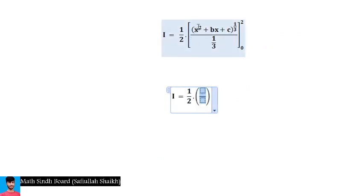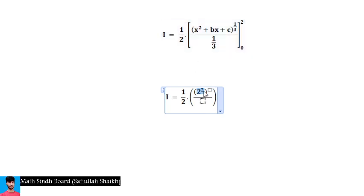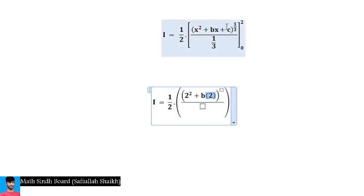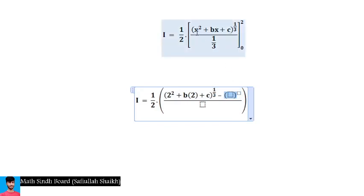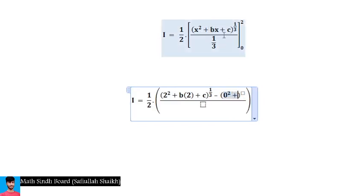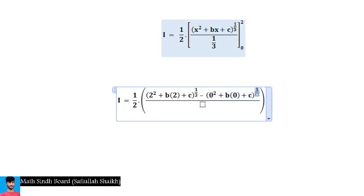Applying the limits: for the upper limit, substitute x = 2 wherever x appears, giving (2² + b·2 + c)^(1/3). For the lower limit, substitute x = 0, giving (0² + b·0 + c)^(1/3) = c^(1/3).